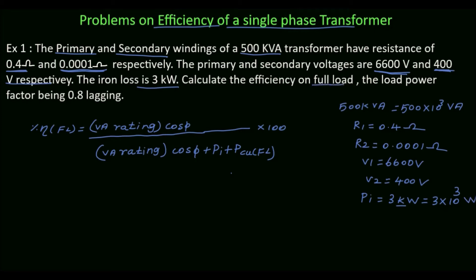We have to calculate the full load efficiency, the load power factor being 0.8 lagging, so cos φ is 0.8. The full load percentage efficiency formula is: VA rating × cos φ, divided by VA rating × cos φ plus iron loss plus full load copper loss. The VA rating, cos φ, and iron loss are all given. The only unknown parameter is the full load copper loss.